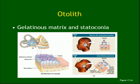The statoconia and the gelatinous matrix together are called the otolith. When you move around, the statoconia on the gelatinous material move and bend the hair cells. Depending on the direction of bending you can tell whether you are tilting anteriorly or posteriorly — this is how gravity and position are detected.